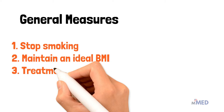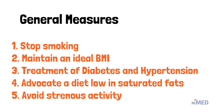Let's start with the general measures first. How should you advise a patient with stable angina? You should stop smoking, maintain an ideal BMI, pursue treatment of diabetes and hypertension, advocate a healthy diet which is low in saturated fats, and avoid highly strenuous activities.